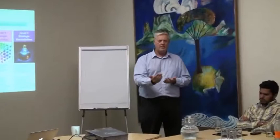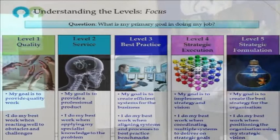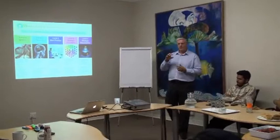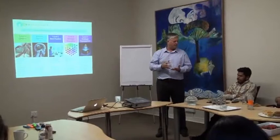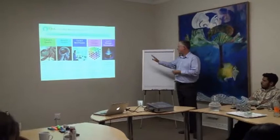At level three — best practice, remember the most vulnerable level — my goal is to create efficient systems for the business. It takes a very high level of skill to make this level look solid and tangible. I do my best work when I'm aligning systems and processes to best practice benchmarks. Level four is strategic execution. My goal is to implement strategy and vision — not necessarily make it, but make it happen. In the effective leader index we talk about building bridges of meaning: that's the key job of the strategic leader, building bridges between the grand strategy and what people end up doing every day.